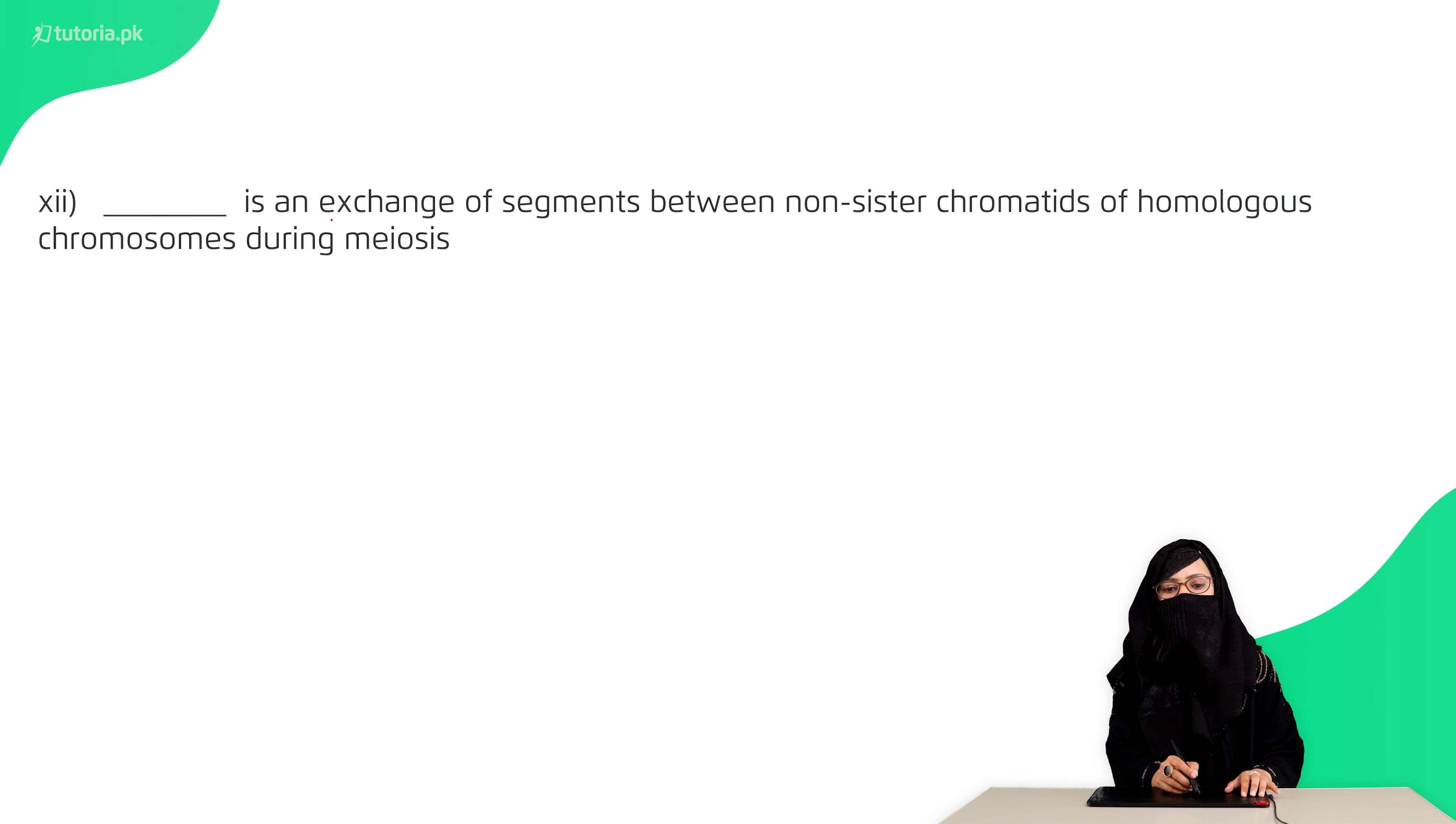Crossing over is an exchange of segments between non-sister chromatids of homologous chromosomes during meiosis.